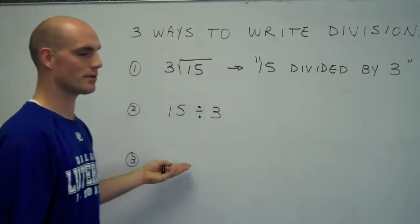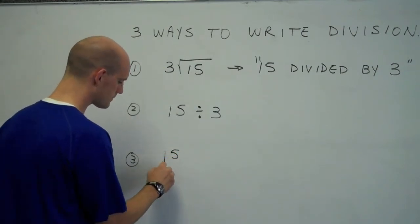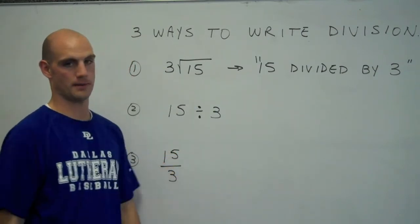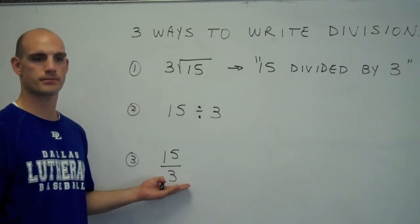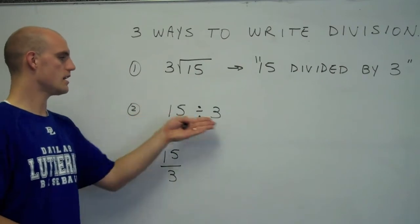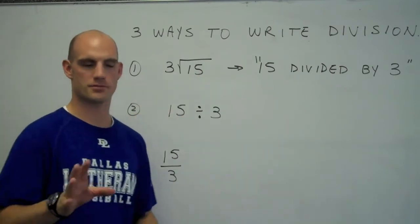Another common way that we write division would be to put 15 on top and 3 on the bottom. We also read this as 15 divided by 3. Now, there are a couple of distinct features of each of these, and I'm going to show them to you now.